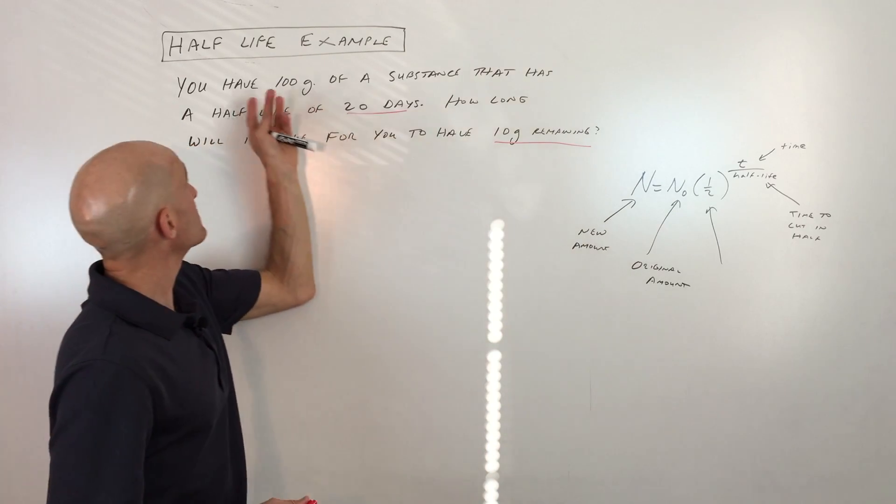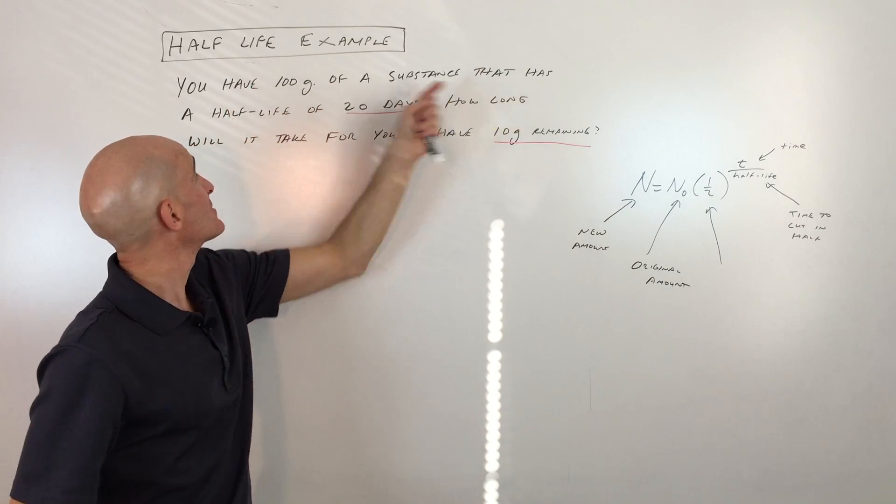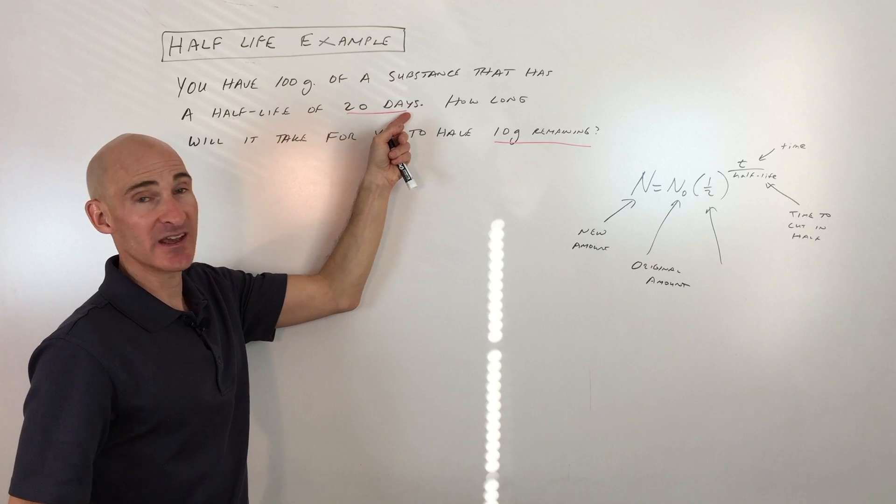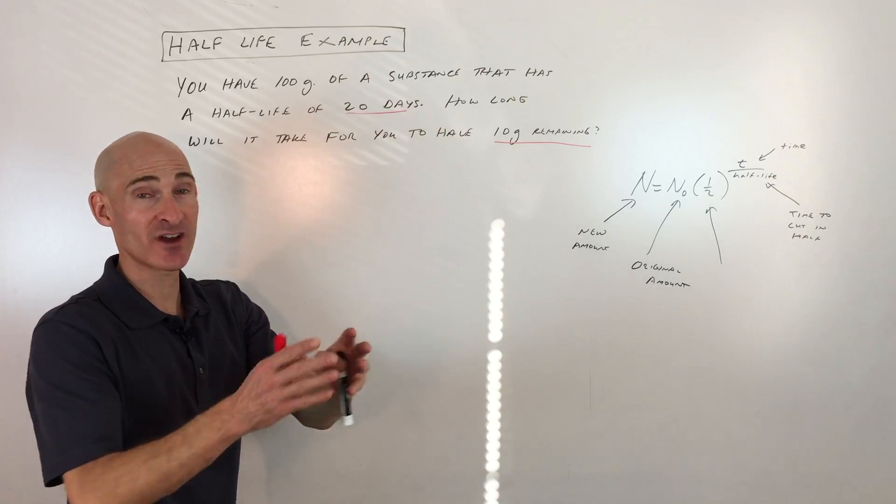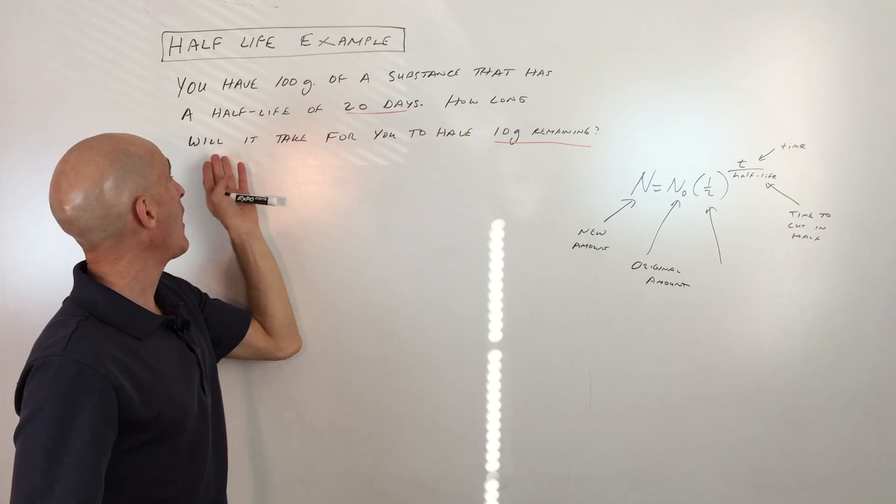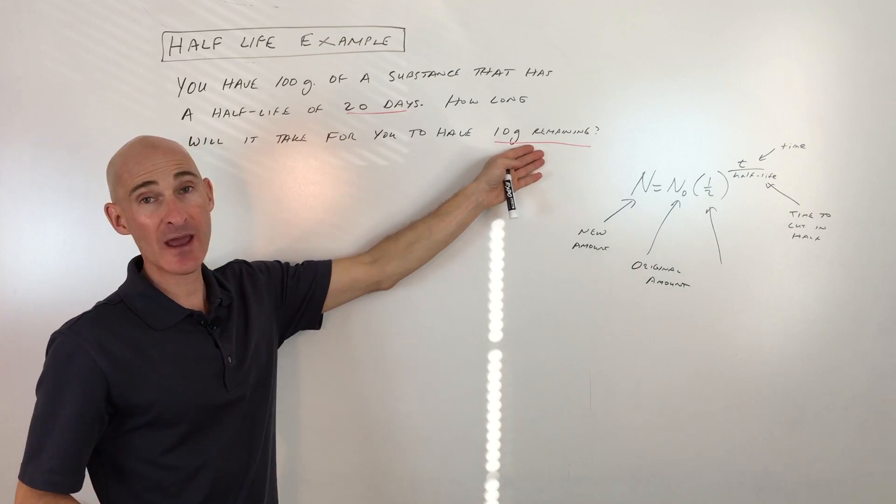So let's look at an example. It says you have 100 grams of a substance that has a half-life of 20 days, so it takes 20 days for it to cut into half or break down to half. How long will it take for you to have 10 grams remaining?